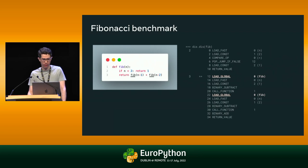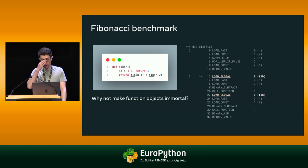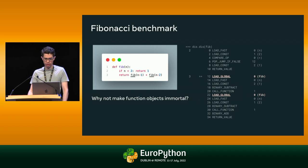Looking at the Python bytecode, the two load global bytecode operations correspond to the two recursive calls to fib. They load the fib function from the globals dictionary and push it to the interpreter stack, incrementing the reference count of the fib function object. Later when the function call is finished, the object is popped from the stack and the reference count is decremented. Since all the threads are calling the same function, they're all concurrently modifying that same reference count field. We could try making all functions immortal, but functions don't necessarily live forever, and they hold a reference to the globals dictionary — making functions immortal would prevent the globals dictionary from being freed, holding on to global variables and preventing finalizers from running.